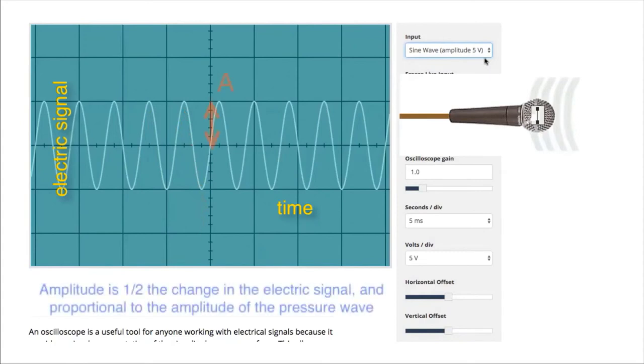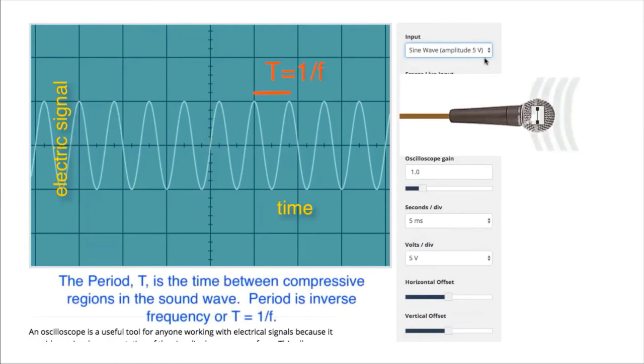The amplitude is proportional to the pressure variation in the medium. The period is the time that it takes for the pressure wave to advance one wavelength, or the time between consecutive crests.